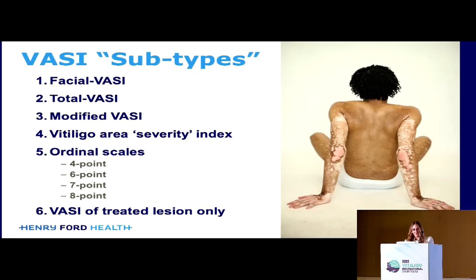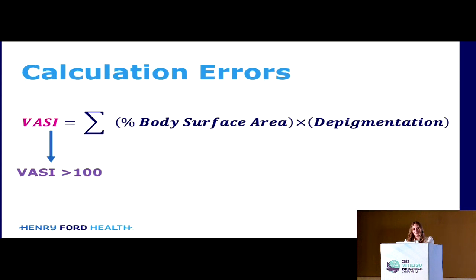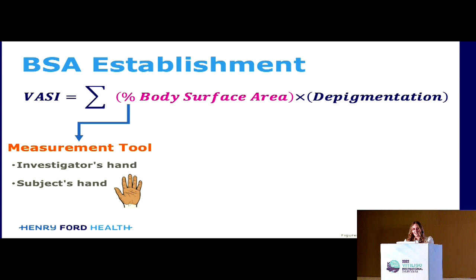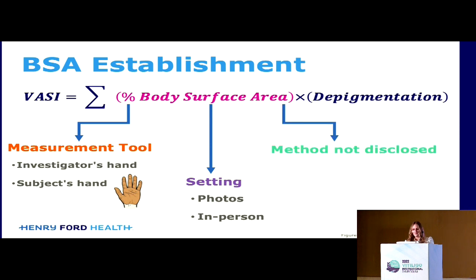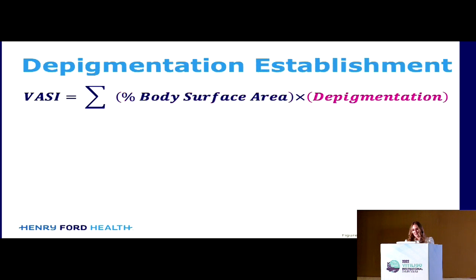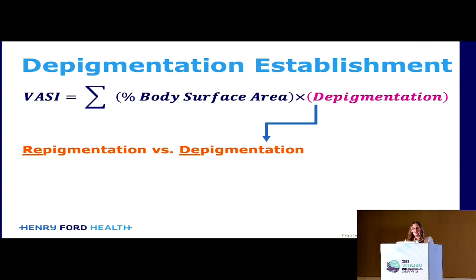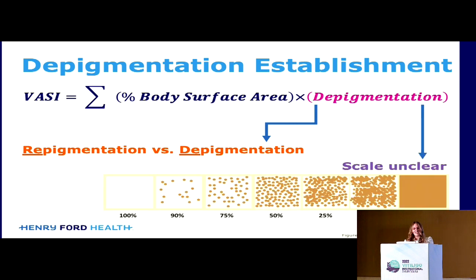We found many variations or subtypes of the VASI. Only two have been validated: the facial VASI and the total VASI. We also found some calculation errors, including a study with a VASI over 100 and a body surface area that was not included. There were variations in how BSA was established — different measurement tools were used, some using an investigator's hand and some using the subject's hand. Some assessments were done in person, and some were done from photos. There is evidence that photos can underestimate VASI. Some studies also did not disclose the method. For depigmentation, some studies used repigmentation rather than depigmentation, and some used an unclear scale.